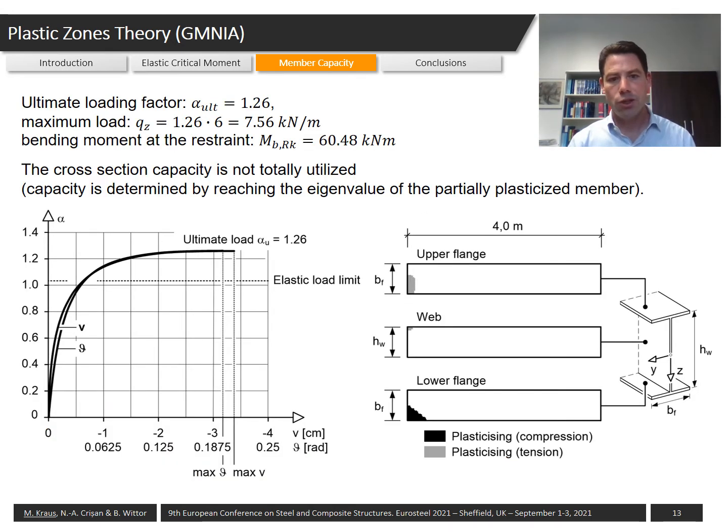For the cantilever shown on the previous slide, an ultimate loading factor of 1.26 was determined which gives the maximum load to be applied to the structure of 7.56 kN per meter and the corresponding bending moment at the ultimate state of the member of 60.5 kN meter.